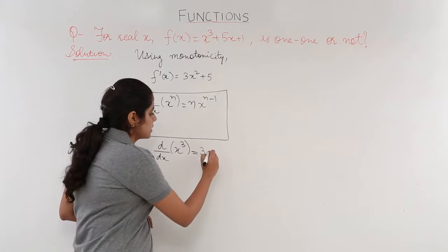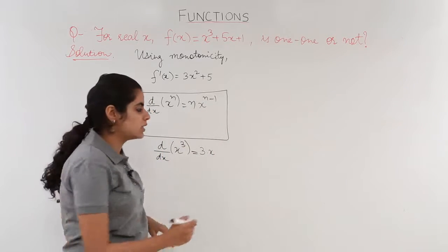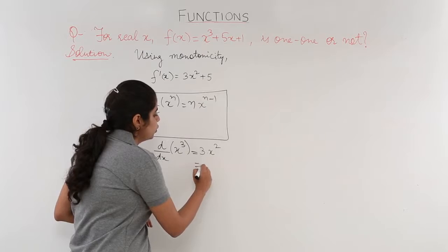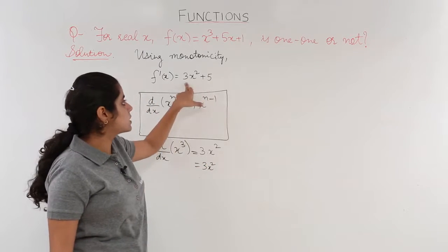Multiply by x. Do what? Do n-1, do power-1, that is 3-1 which is 2. So it is 3x². Hence it is 3x².